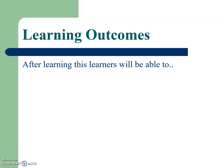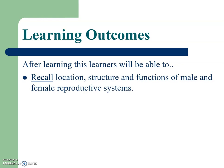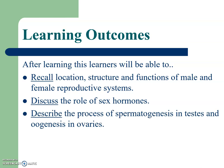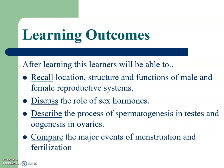After learning this, you will be able to recall the location, structure, and functions of male and female reproductive systems. You will be able to discuss the role of sex hormones, describe the process of spermatogenesis in testes and oogenesis in ovaries, and compare the major events of menstruation and fertilization.